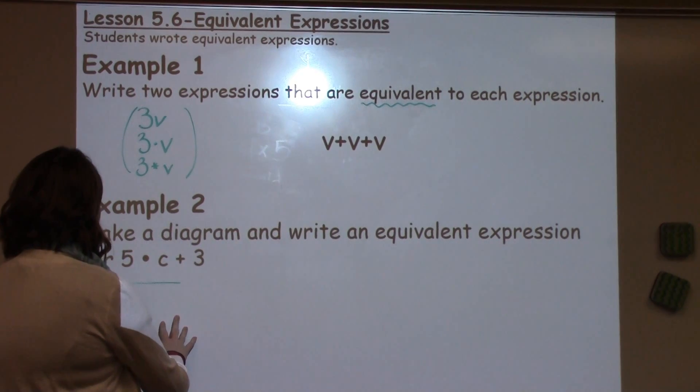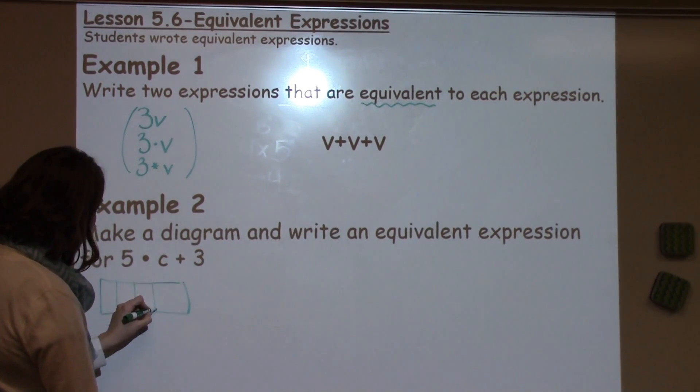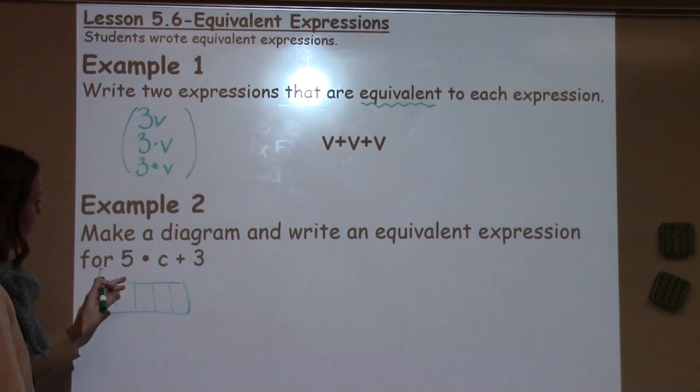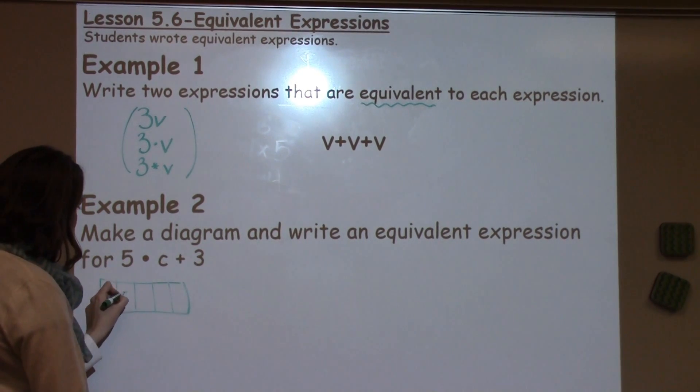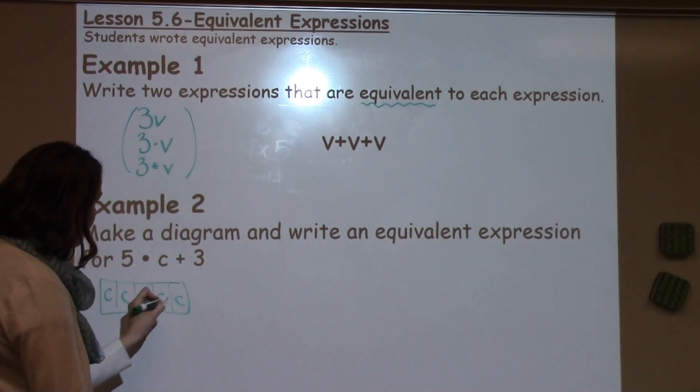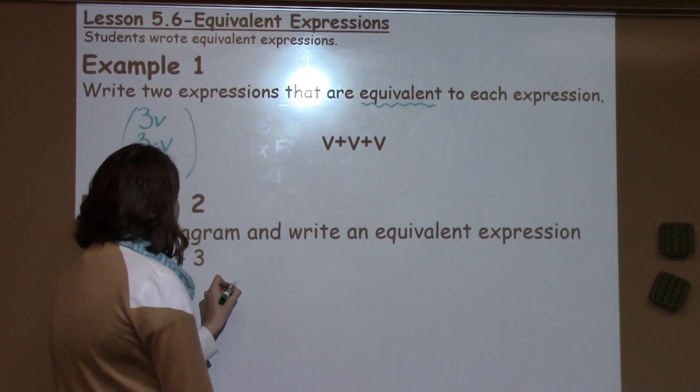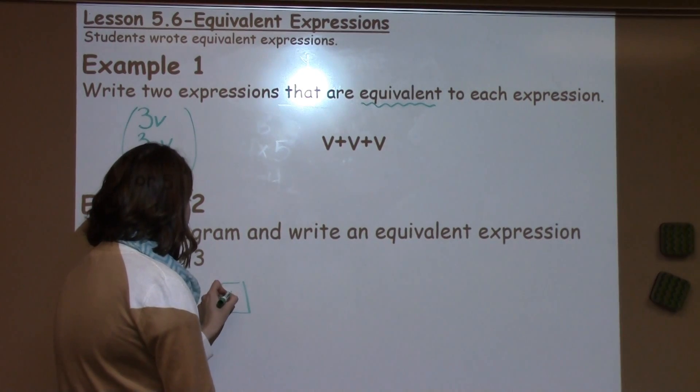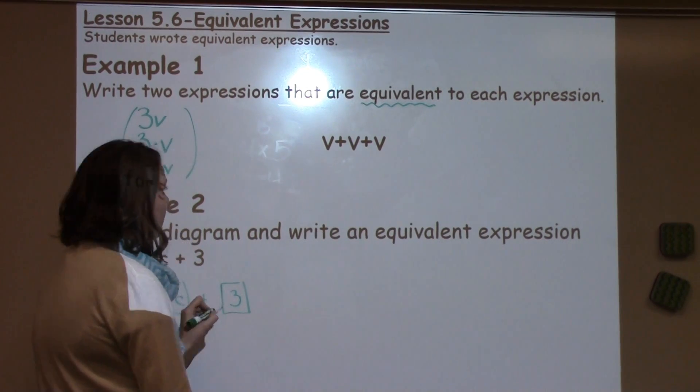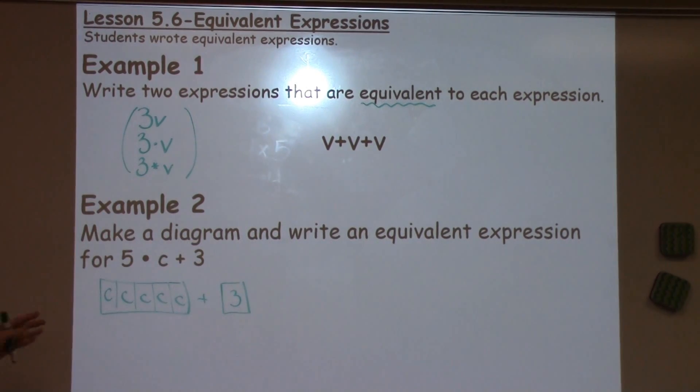What I'm going to do is I'm going to show my 5C. So here's 1, 2, 3, 4, 5. So I'm going to label these C for each of my 5C, because it's 5 times C. And then I need to do my plus 3. So I'm just going to put over here in another box my 3. So this is another way to show a diagram of 5C + 3.